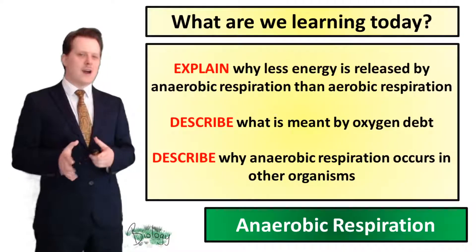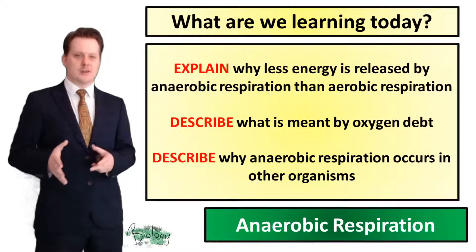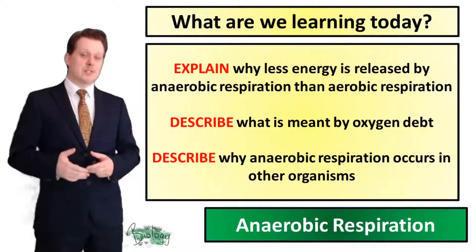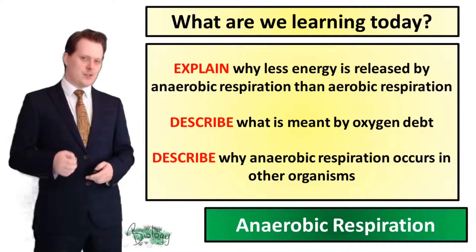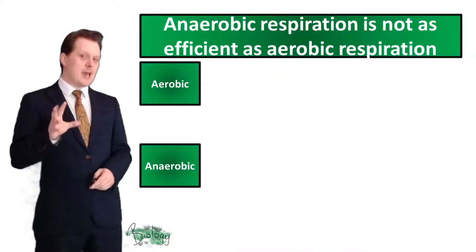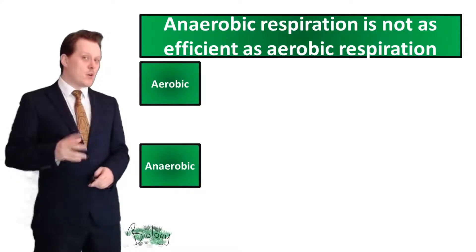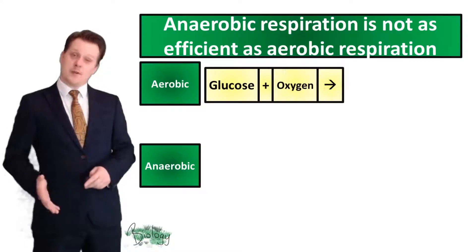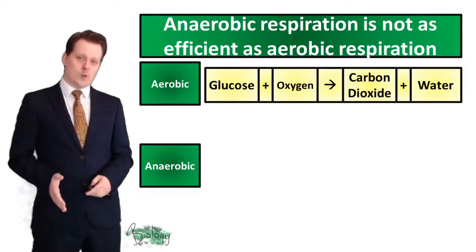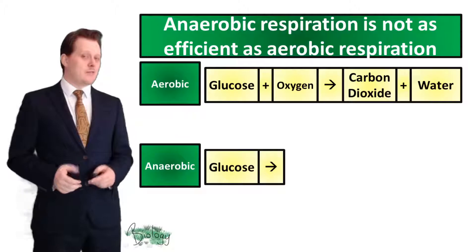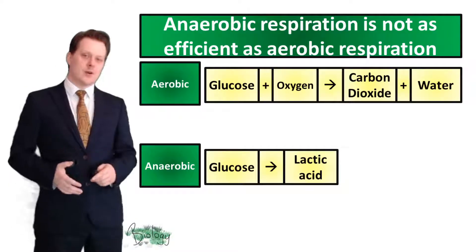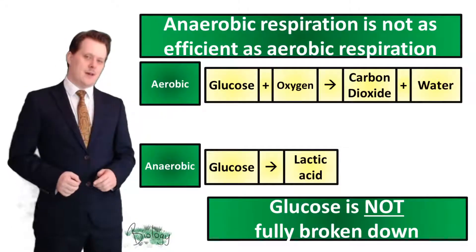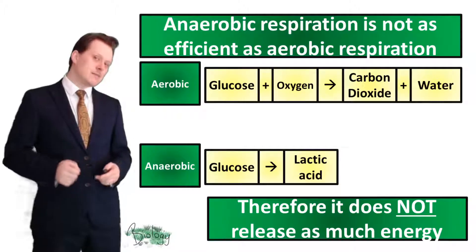In today's lesson we're going to explain why less energy is released by anaerobic respiration as opposed to aerobic respiration, describe what is meant by the oxygen debt, and describe why anaerobic respiration occurs in other organisms. Our equation for aerobic respiration was glucose plus oxygen gives us carbon dioxide and water. Anaerobic respiration is where glucose is converted into lactic acid. In this reaction the glucose is not fully broken down, which means it does not release as much energy.